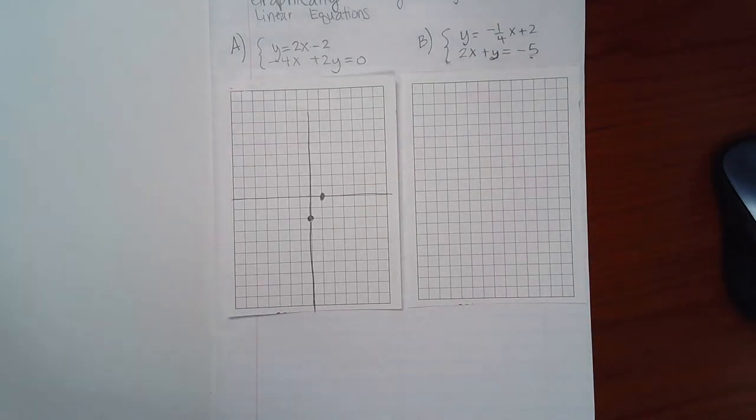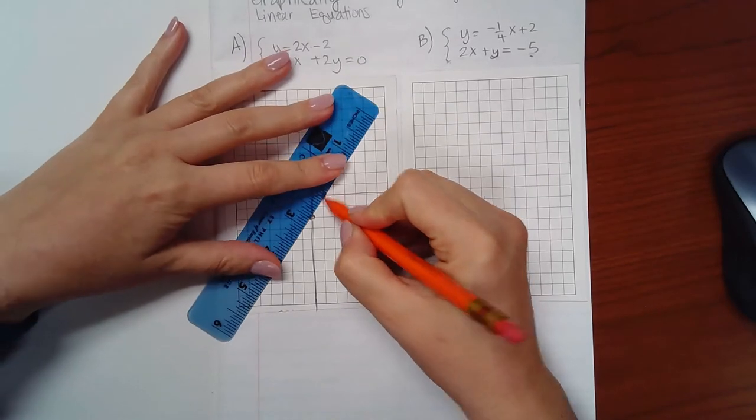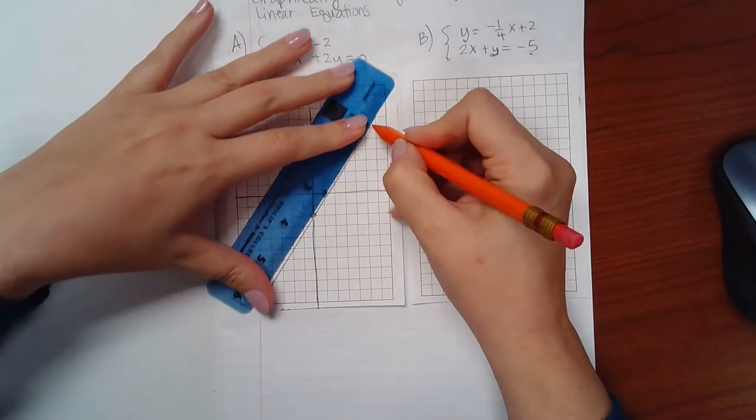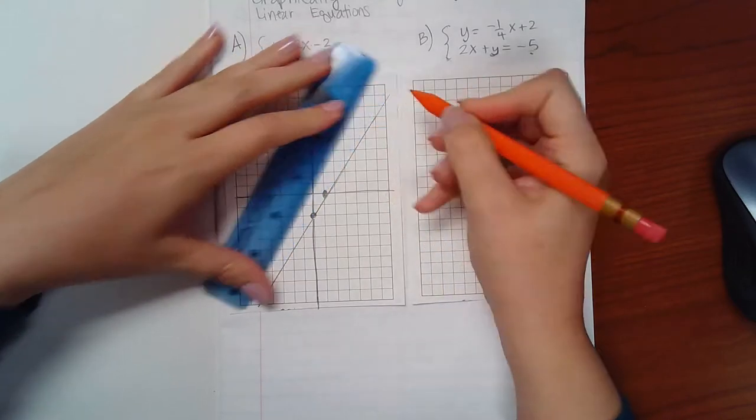Which would yield this line here. I'm grabbing my ruler. So we end up with this line here.